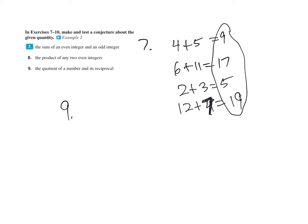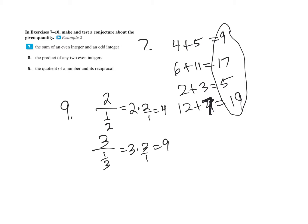Number nine: the quotient (division) of a number and its reciprocal. If I said two, its reciprocal is one-half. What you're doing is the top times the reciprocal of the bottom, and that gives you four. What about three over one-third — its reciprocal? That's three times the reciprocal of the bottom. So can you make a conjecture? The conjecture is that the quotient of a number and its reciprocal is just the number squared.